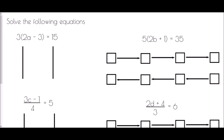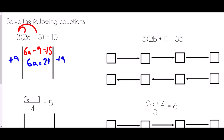Now we need three stages to reach our final answer. Starting with 3 brackets 2a minus 3 equals 15, the first stage is to expand the bracket: 3 times 2a is 6a, and 3 times negative 3 is negative 9, giving 6a minus 9 equals 15. Next we undo the subtraction by adding 9: 6a equals 24. Finally we undo the multiply by 6 by dividing both sides by 6, giving a equals 4.